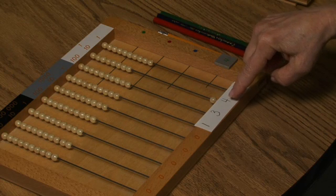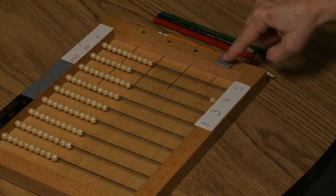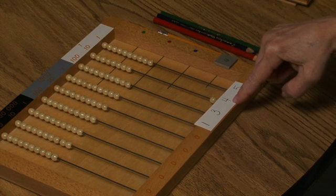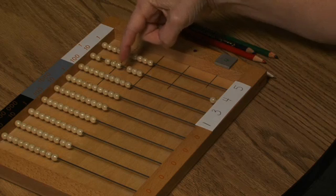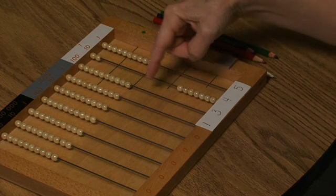4 taken 4 times is 16 tens. 16 tens means 6 tens, 1 in the hundreds place.